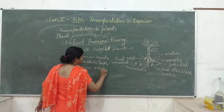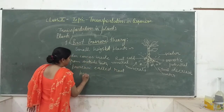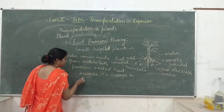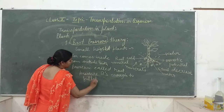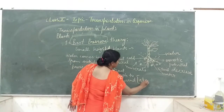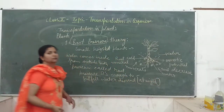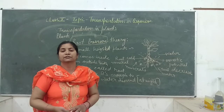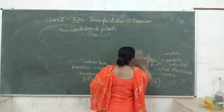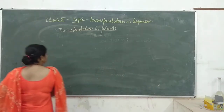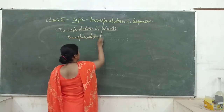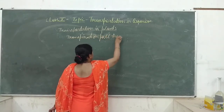Now, what happens in large trees? The theory explaining water transport in big trees is known as transpiration pull theory. This theory is active in the daytime. As the name suggests, there is a process called transpiration — it is the evaporation of excess water through stomata in the daytime. Because of the heat of the sun, the excess water of the plant is transpired into the environment.